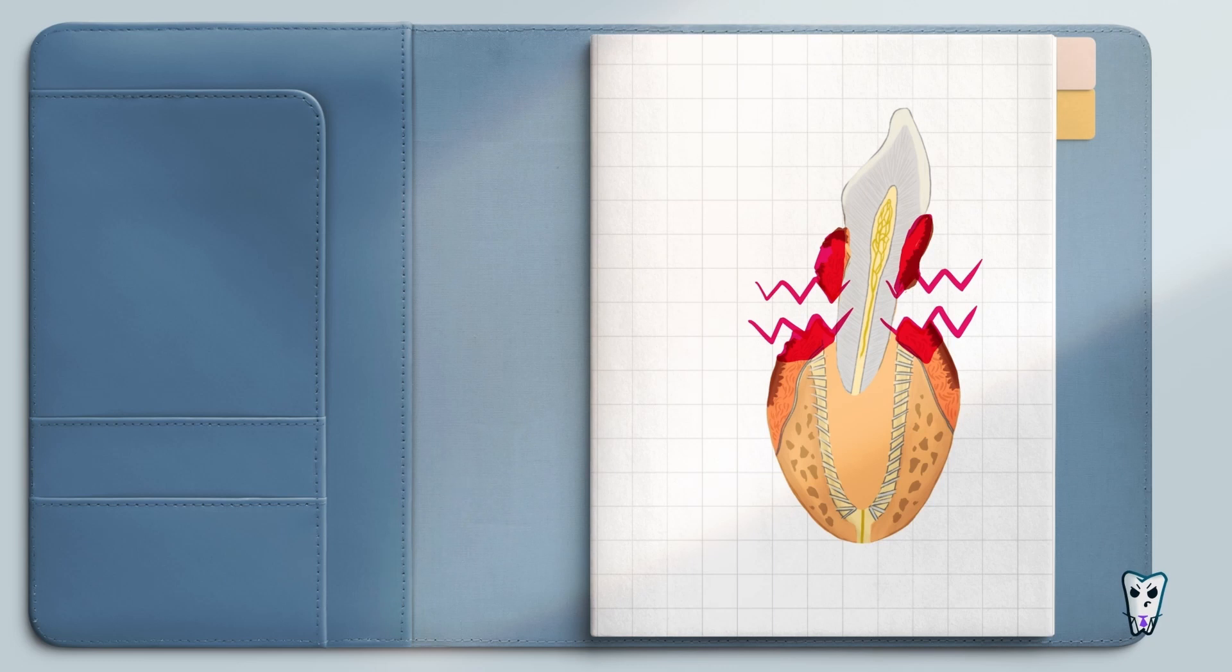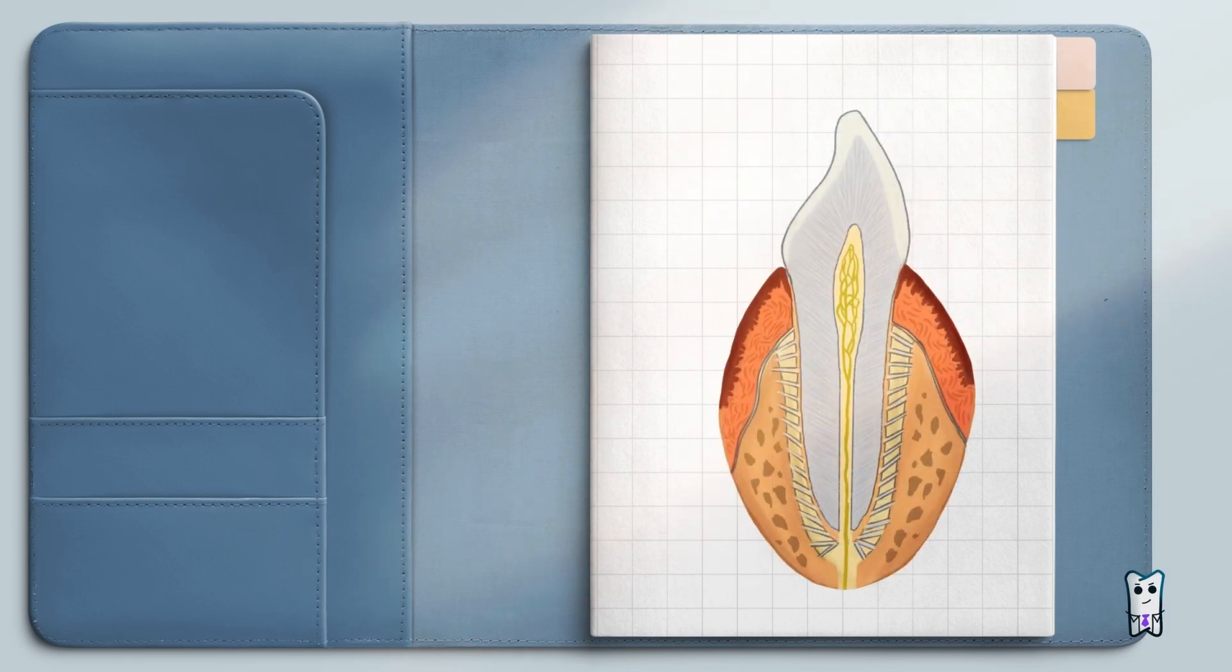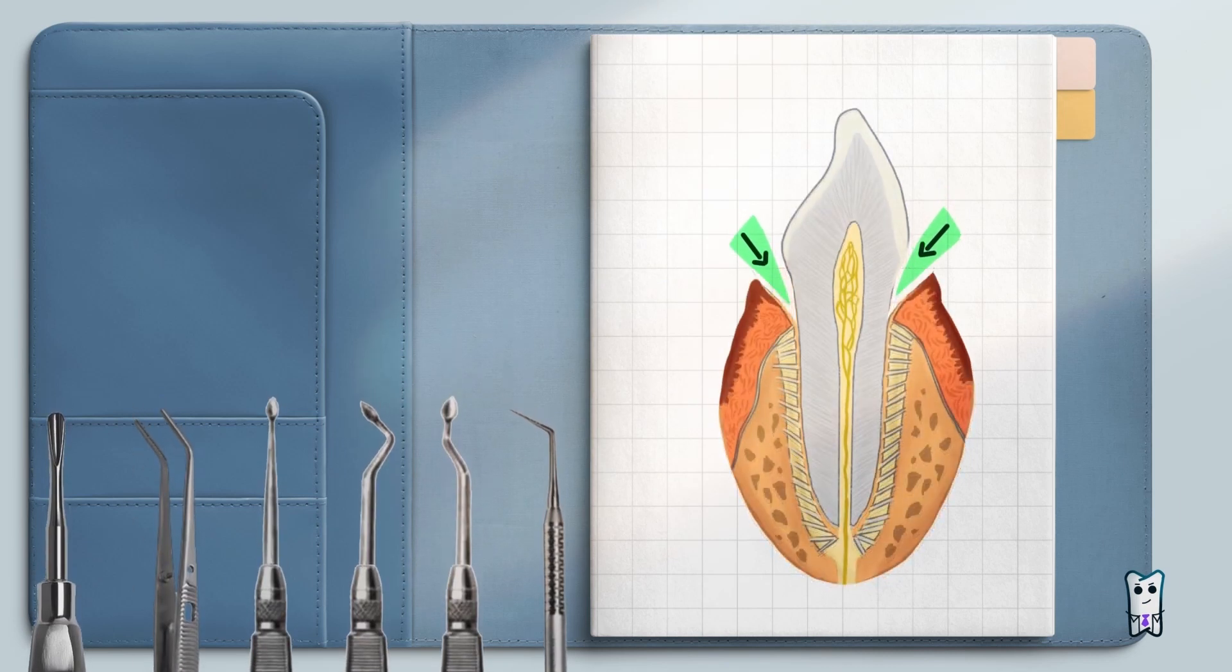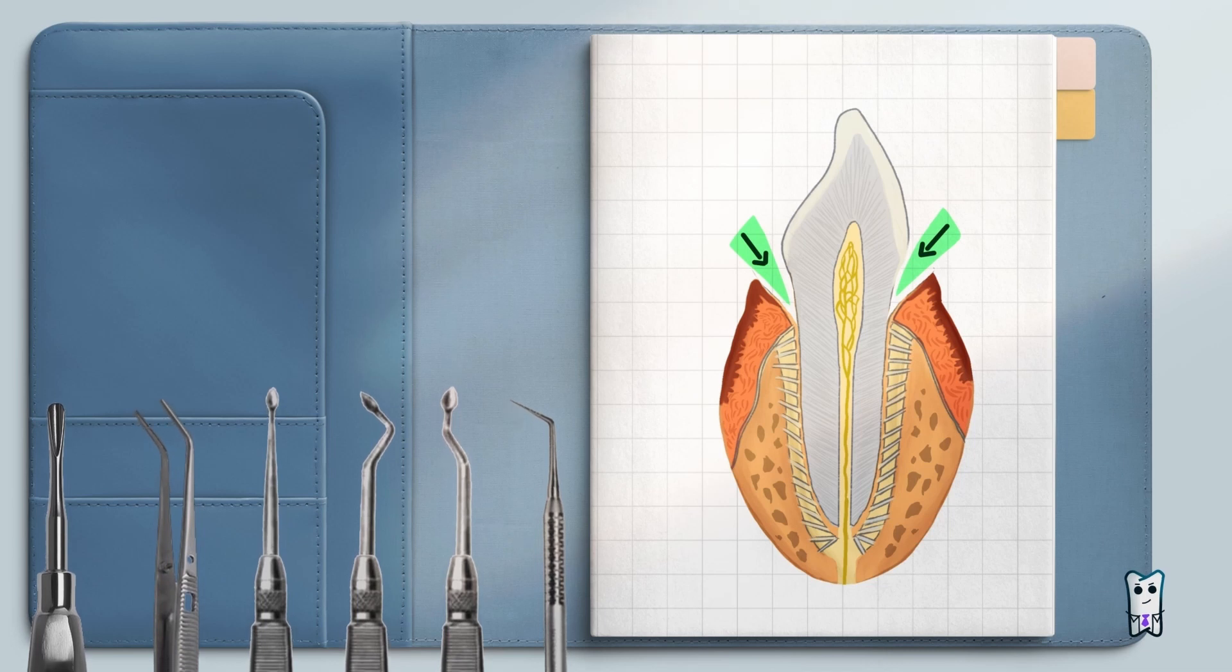So what tools can be used for syndesmotomy? Curved or straight thin instruments are most often used, like a probe, tweezers, syndesmotome, or if we are extracting teeth in the anterior area, a straight elevator will do a perfect job.